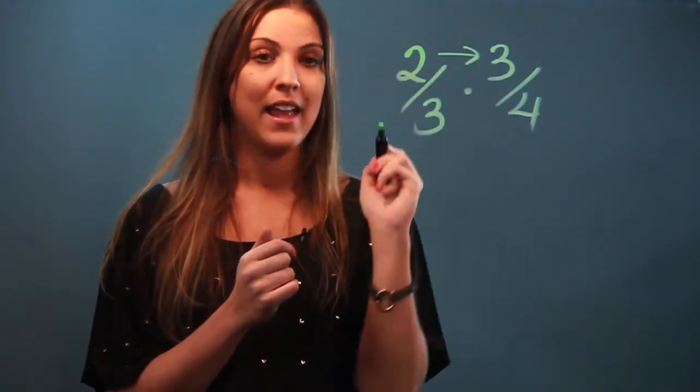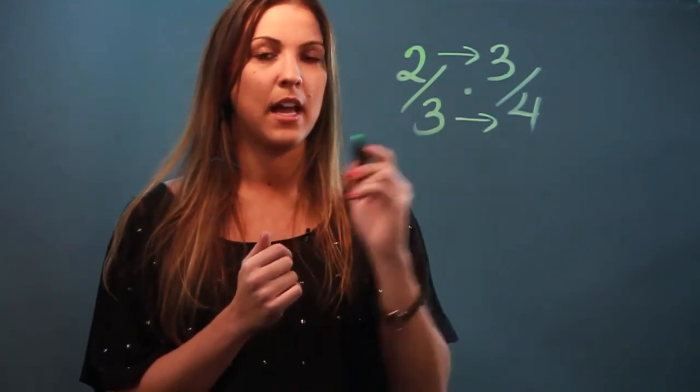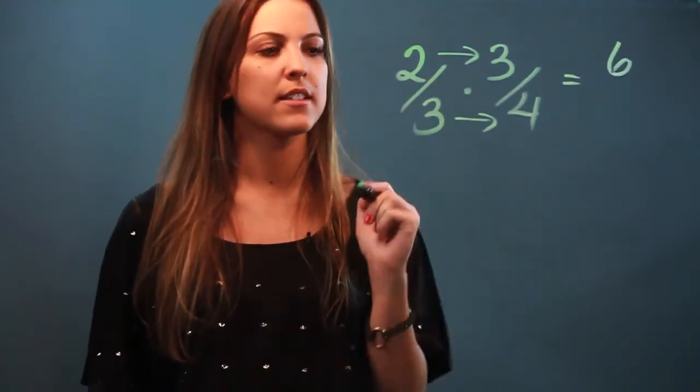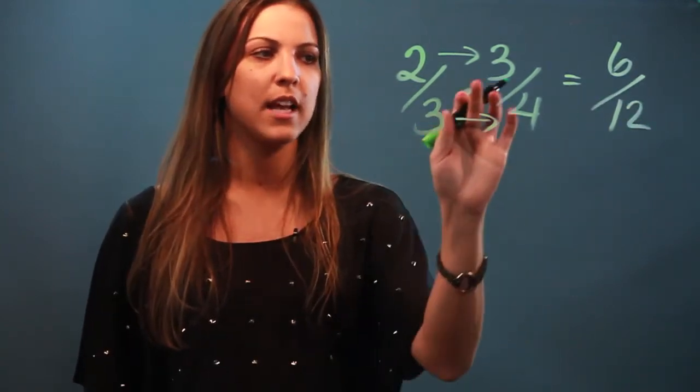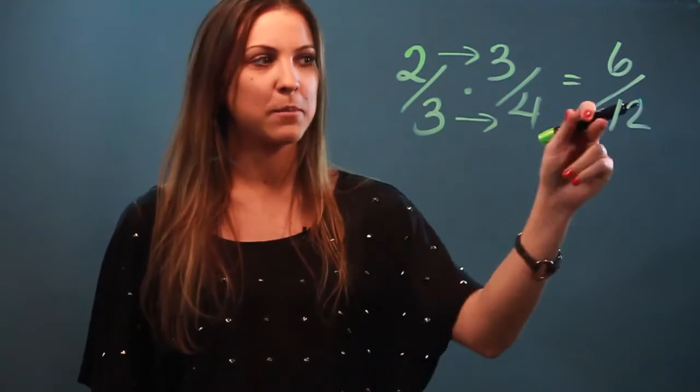So two times three equals six, and three times four equals twelve. So two-thirds times three-fourths equals six-twelfths. Now I can just push that a little further and reduce that fraction.